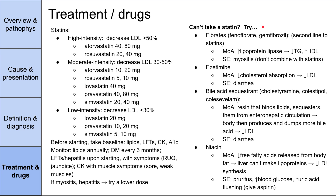The third category is bile acid sequestrants, including cholestyramine, colestipol, and colesevelam. The mechanism is that these drugs are a resin that binds lipids, sequestering them from the enterohepatic circulation. The body then produces and dumps more bile acid into the GI tract. This prevents lipids from entering enterohepatic circulation, forcing the body to make more bile acids, and in the process the body uses up LDL — so the effect is a reduction in blood LDL. Similar to ezetimibe, the side effect is diarrhea, flatus, and greasy stools. The last category is niacin, which decreases free fatty acid release from body fat, preventing the liver from making lipoproteins, thus reducing LDL synthesis.